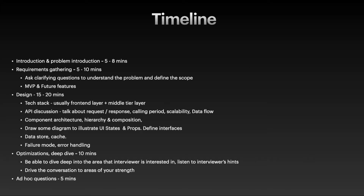I'd like to break down the timeline during a system design interview. Usually there will be an introduction at the beginning with some warm-up questions, then the system design problem will be presented. Once given the problem, you should spend about 5 to 10 minutes to explore the use cases and gather requirements. The discussion should aim at exploring the problem space, figuring out what to support and what not, scoping it down to an MVP version, discussing what to add in the future, and asking the interviewer if that sounds good.